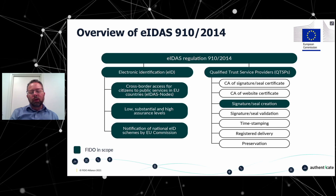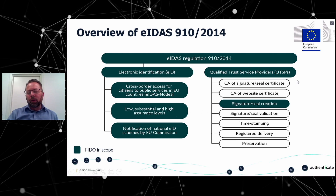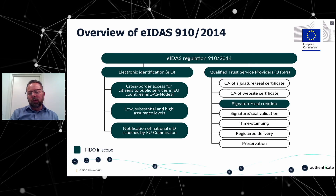Low means essentially username and password. Substantial is one-time passwords, typically. High represents dynamic cryptographic protocols and hardware authenticators, so FIDO can be applied at the high assurance level. Notification of national EID schemes by the EU Commission means that for every EU country that has a national EID scheme, these schemes can be notified and used for cross-border access. On the right-hand side, we find the qualified trust service providers, so-called QTSPs, and the one that matters most for FIDO is signature and seal creation, in particular remote signature and seal creation.